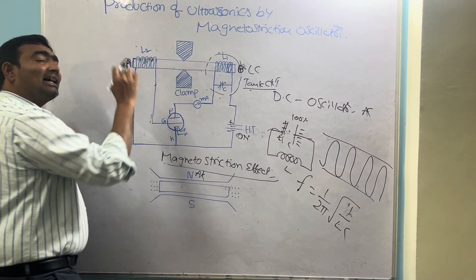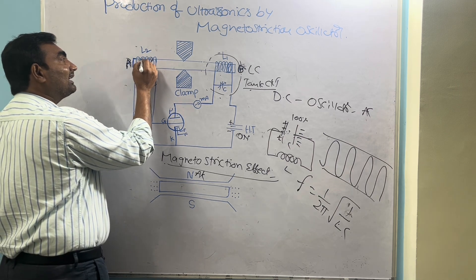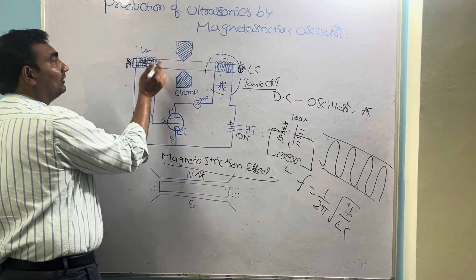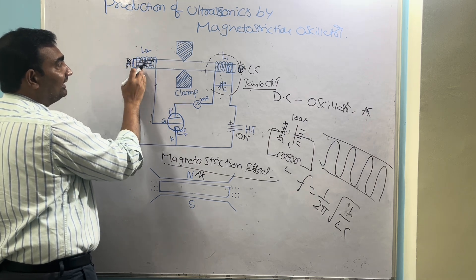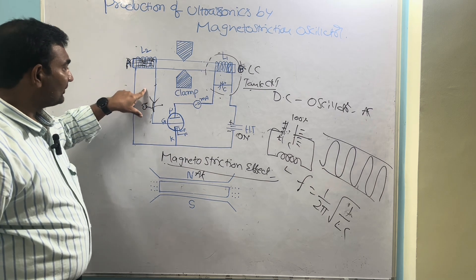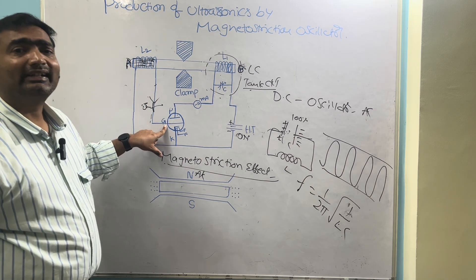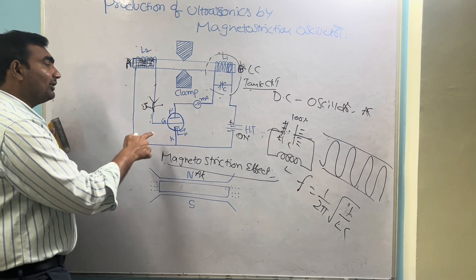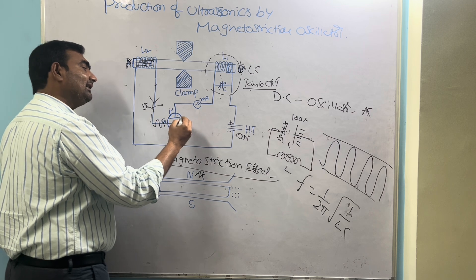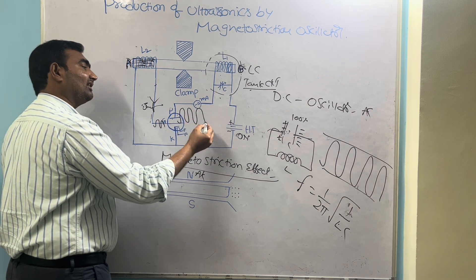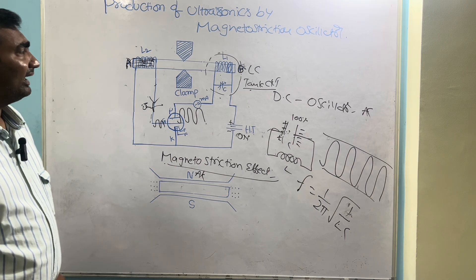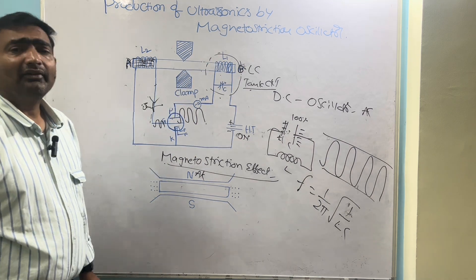Since the rod is already magnetized, the magnetic flux lines linked with coil L2 change. According to Faraday's law, a varying magnetic field produces an EMF. This current is given back to the grid circuit of the triode valve, which amplifies the signal. The amplified signal is then given back to the tank circuit.